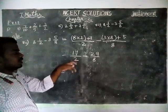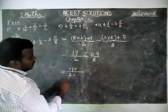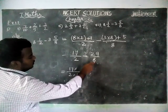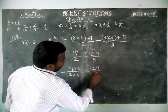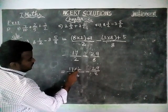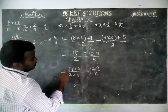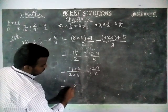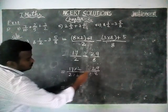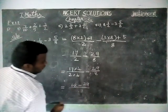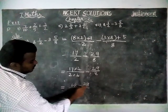The denominators must be equal. We have 8, so we convert 17/2: multiplying by 4 gives denominator 8. So 17/2 × (4/4) gives 68/8, minus 29/8. Both have the same common denominator of 8.